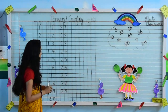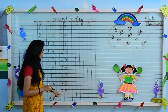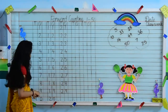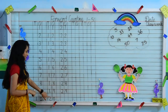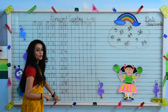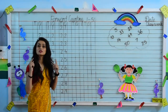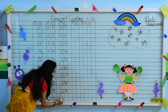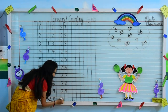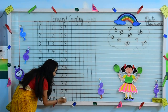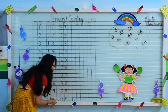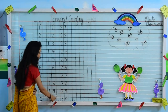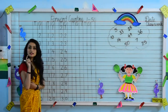Very good, kids. Tell me which is the last digit of this line. We have written 10, 20 — next will be 3, 0 — 30. 1, 0 — 10; 2, 0 — 20; 3, 0 — 30. Very good, kids.